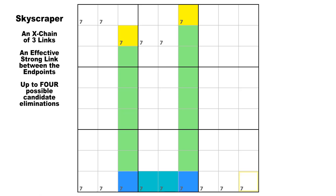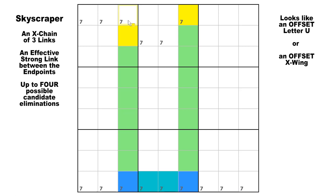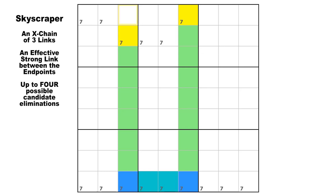When an AIC takes this particular shape, it is called a skyscraper. Notice that it looks like the letter U, but it is offset up at the top. Also notice that if either one of the endpoints was moved one cell so that the two endpoints were in the same house — i.e., row one — this would be an X-wing. So a skyscraper can also be perceived as an offset X-wing, which is another way to help you find them.